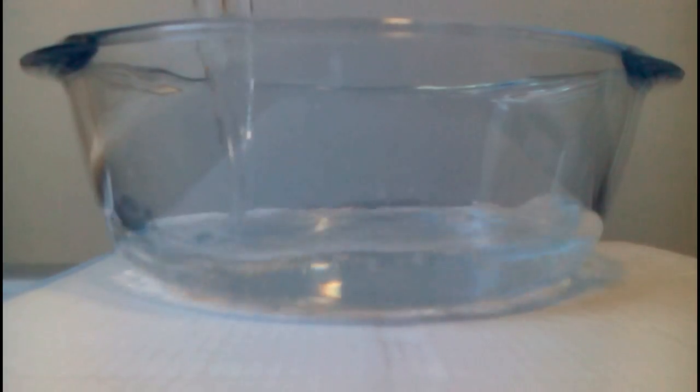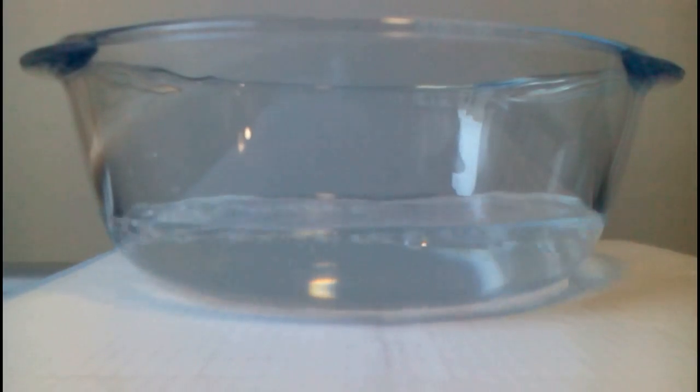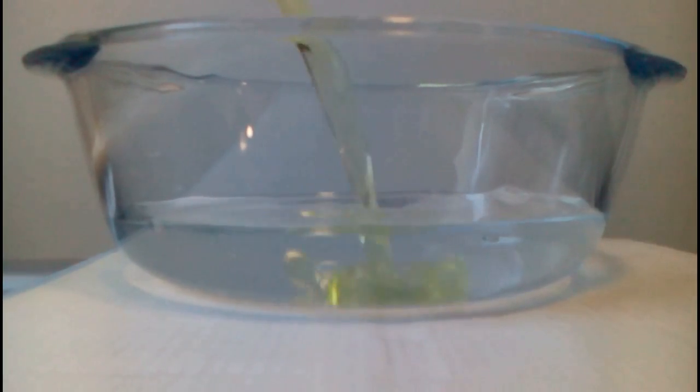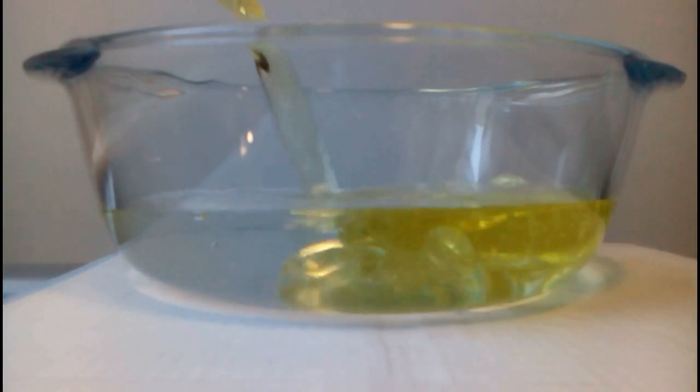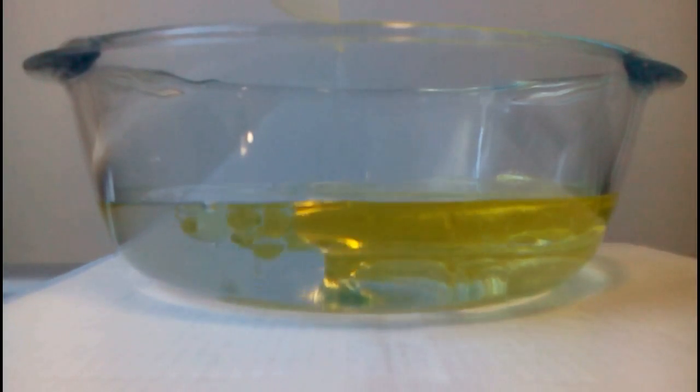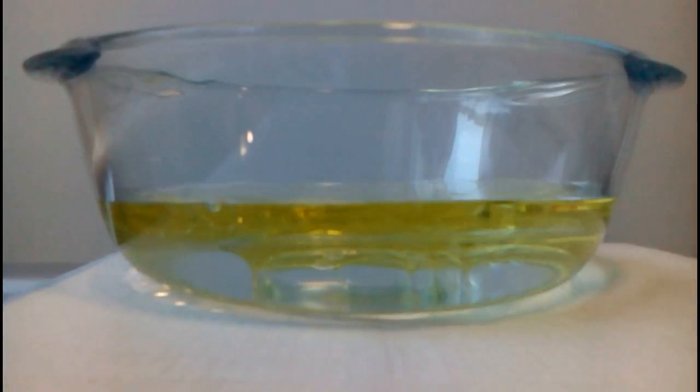An emulsion is made up of a mixture of immiscible liquids, for example this water and oil here. Immiscible liquids are ones that, after mixing, will separate out and will not stay mixed together.